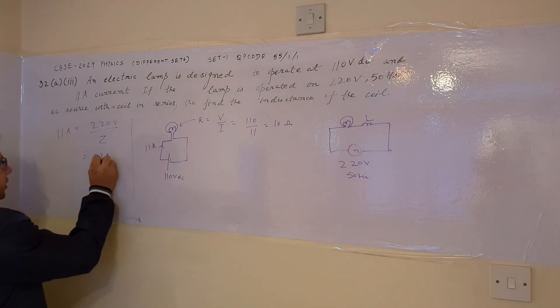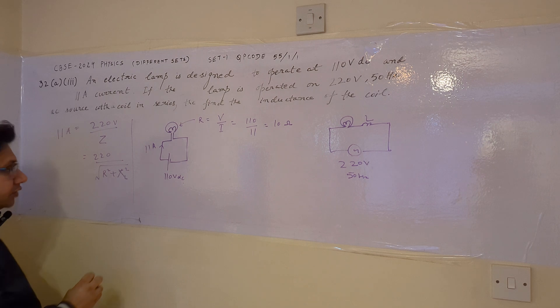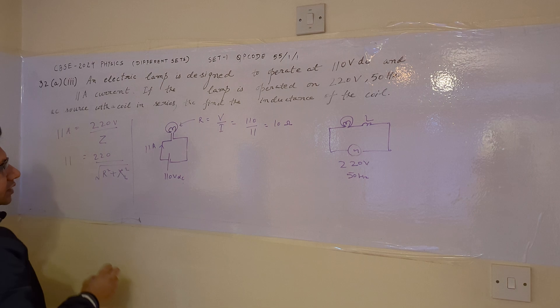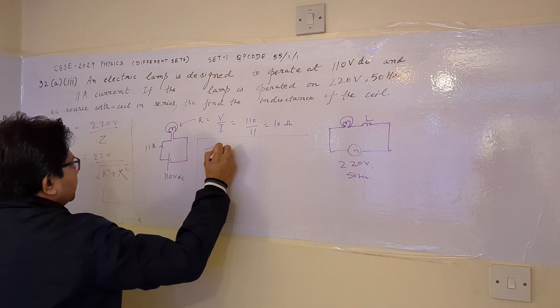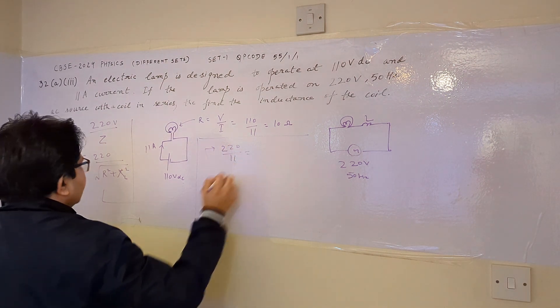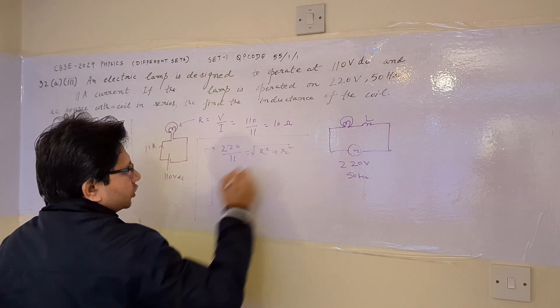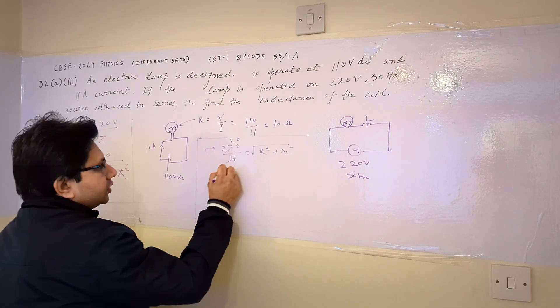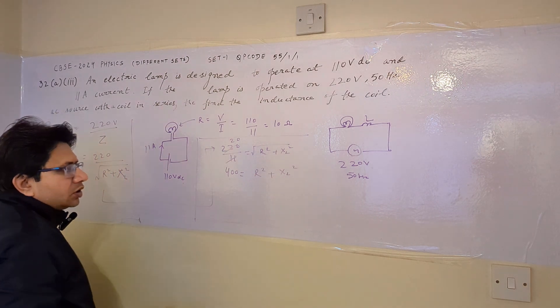Now the impedance Z is given by square root of R square plus XL square, where XL is the inductive reactance. So we can say that 11 equals 220 upon square root of R square plus XL square. Let us solve this equation. So this comes out to be 220 upon 11 equals square root of R square plus XL square. This comes out to be 20.